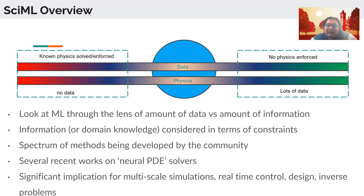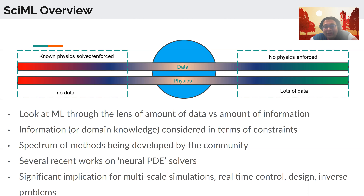Building on what Santi talked about earlier in terms of the Venn diagram of where SciML resides, this picture right in the middle of the slide is a very elegant picture first shown by George Kananakis that lays out the spectrum of methods where machine learning can be. On the far right is when you have tons of data, and so the expectation is that any machine learning model has enough data to learn the inherent underlying patterns in the data — you don't need to know anything about the dynamics or physics of the system.